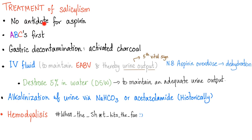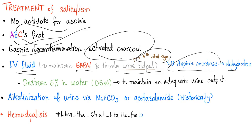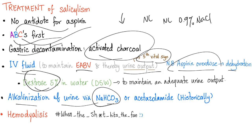Treatment of salicylism: there are no antidotes for aspirin. ABC first — airway, breathing, circulation. Gastric decontamination by activated charcoal. IV fluid to maintain effective arterial blood volume and urine output. If glucose is low, choose D5W; if glucose is normal, choose normal saline — 0.9% sodium chloride solution. Alkalinization of urine via sodium bicarbonate. Hemodialysis when everything fails.